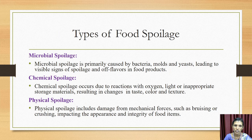Based on the spoilers which can affect food, it is classified into three types: first, microbial; second, chemical; and third, physical. Microbial spoilage affects food based on microbial growth. It is primarily caused by bacteria, molds, and yeasts. It can be easily visible, allowing us to see whether food is spoiled or not.